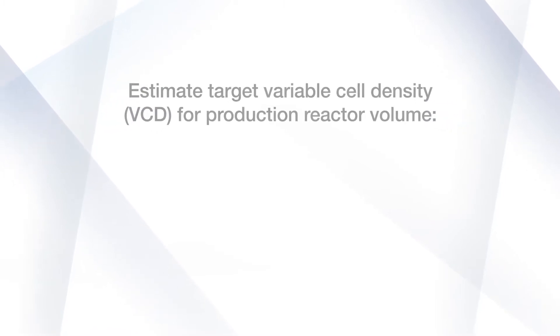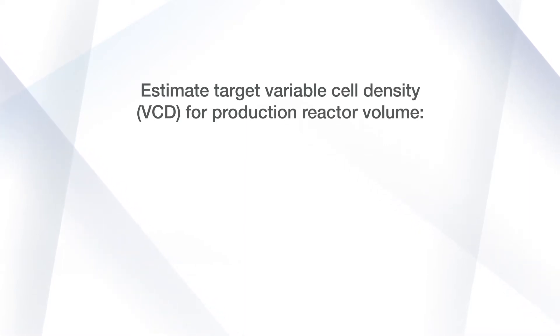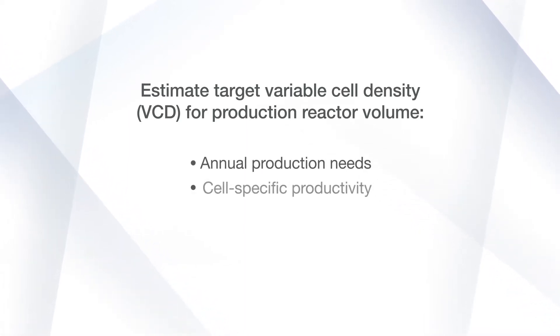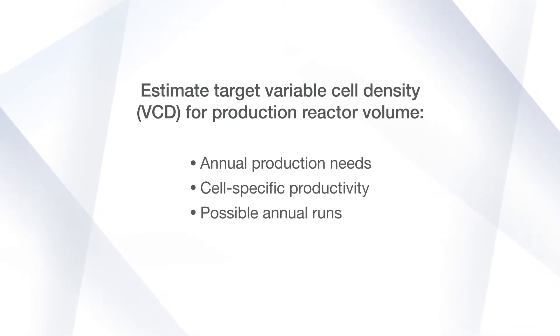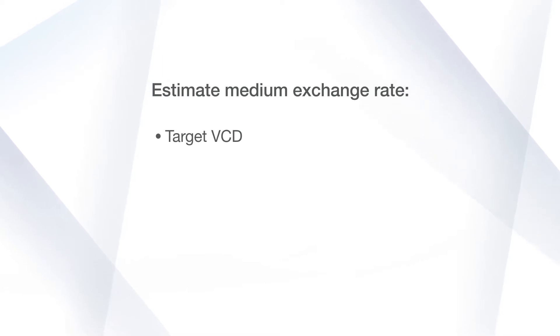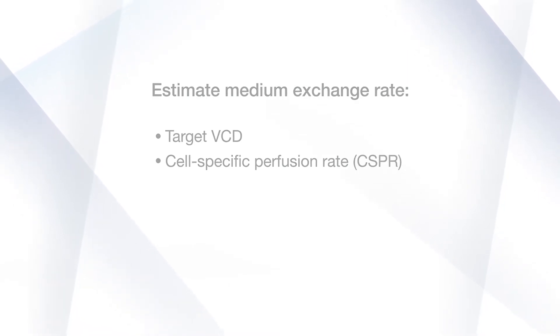The target viable cell density, or VCD, may be estimated for the selected production reactor volume based on the annual production needs, as well as the cell-specific productivity and number of runs that can be completed annually. It will also be important to know approximately what medium exchange rate will be necessary to support your process. This is effectively estimated by knowing your target VCD and cell-specific perfusion rate, or CSPR.